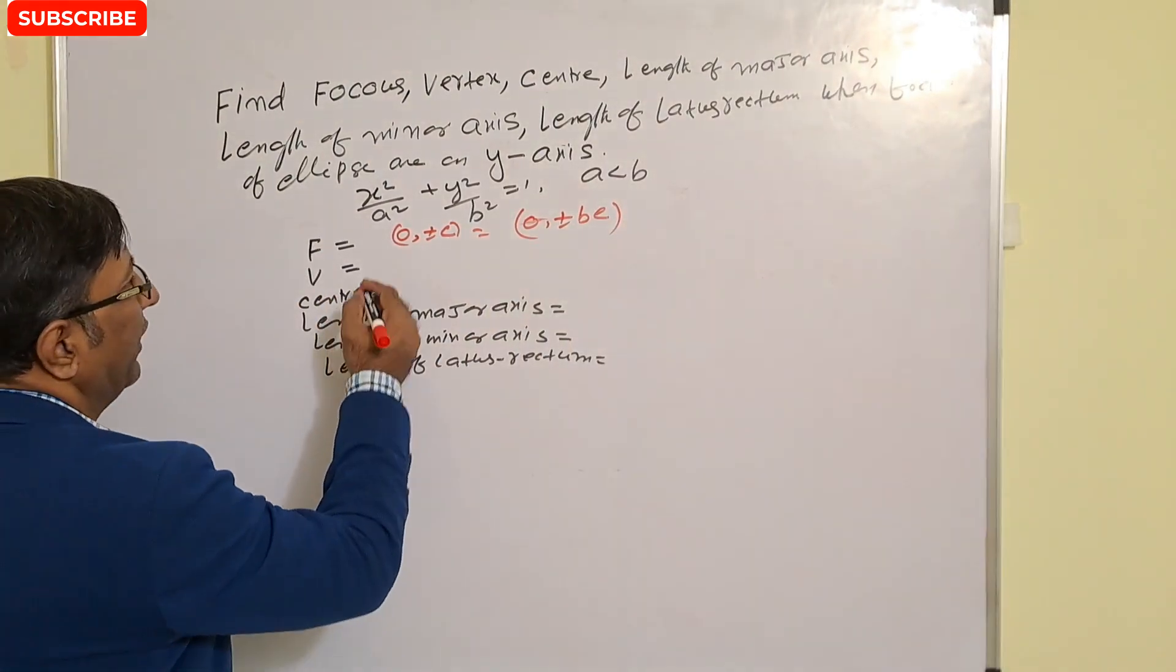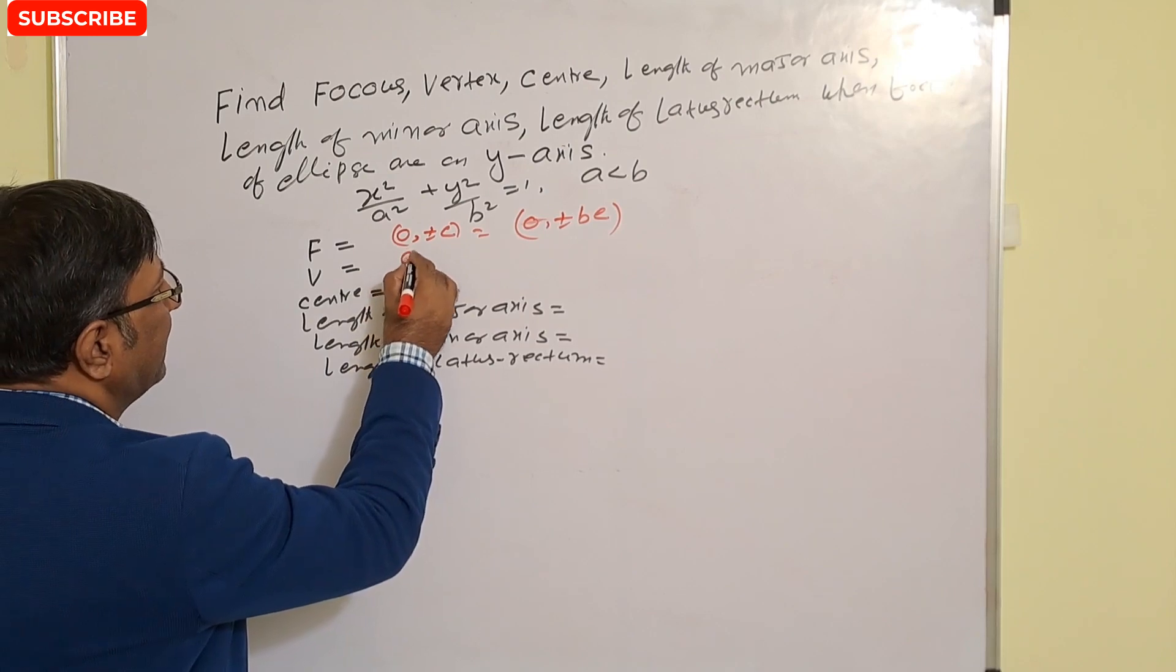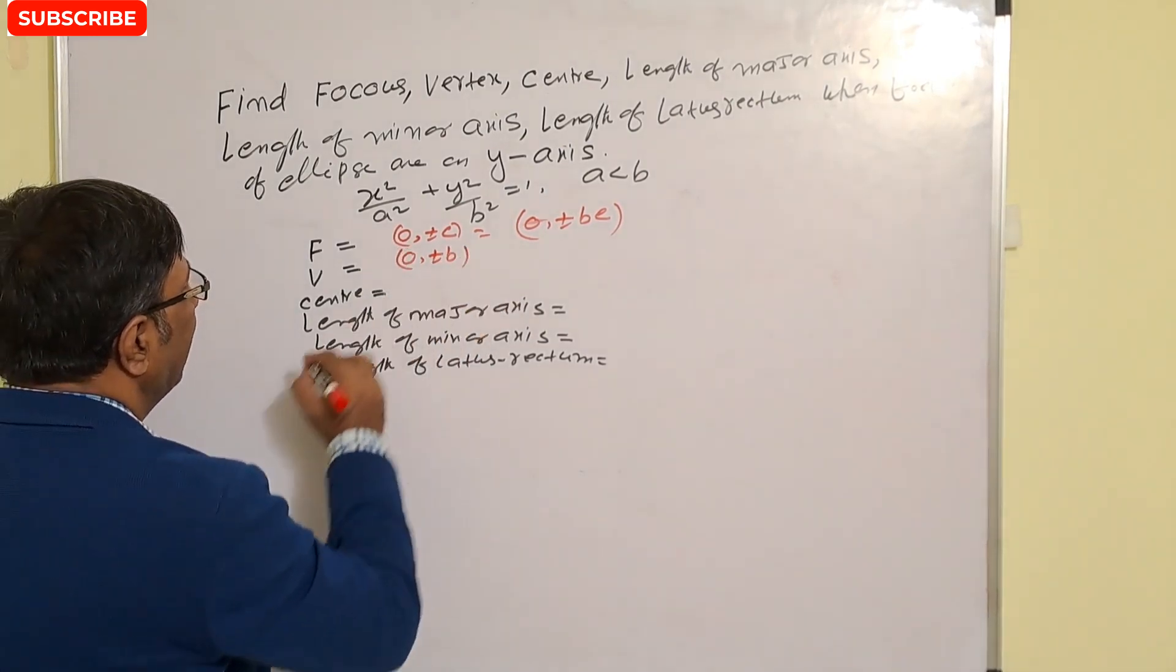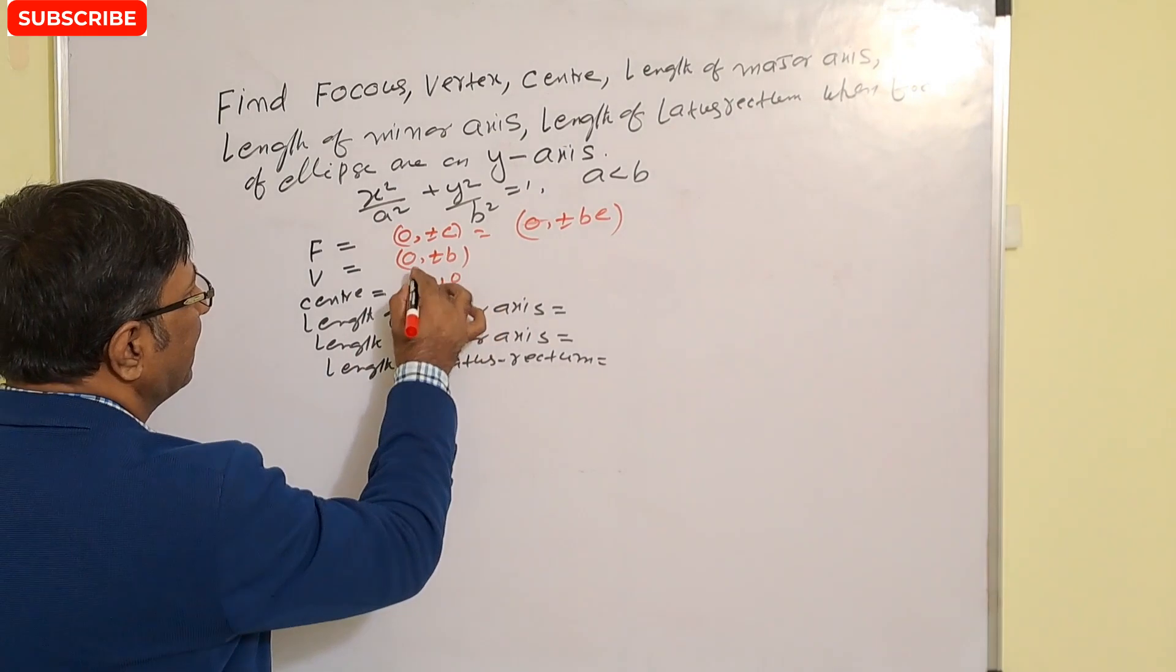And the vertex - vertex is what? x quantity again 0, and this is plus minus b. So vertex is (0, ±b). And center will be what? That is 0, 0.